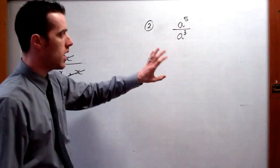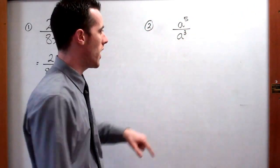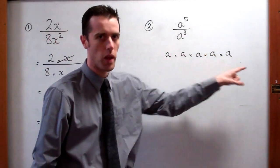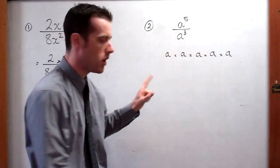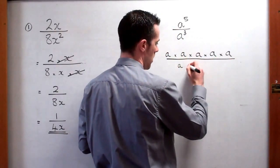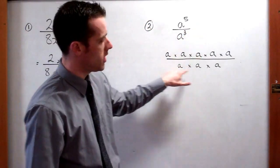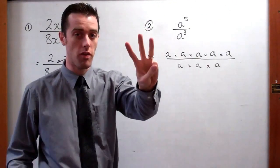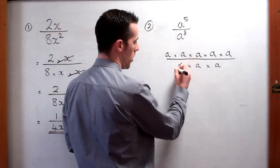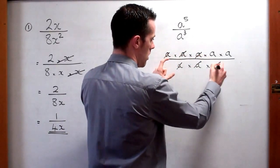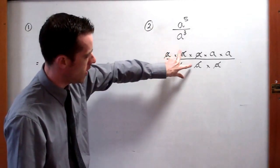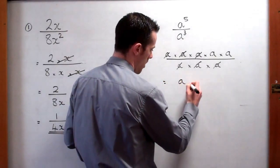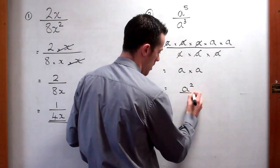The second example has no numbers involved. We have to remember what the powers mean. a to the power 5 means a times a times a times a times a — five a's multiplied together. On the bottom, we've got a cubed, which is a to the power 3, so that's three a's. We can't cancel everything just because they're all a's — we've got to take 3 from the top because there are 3 on the bottom. So we cancel three pairs, leaving a times a on top.